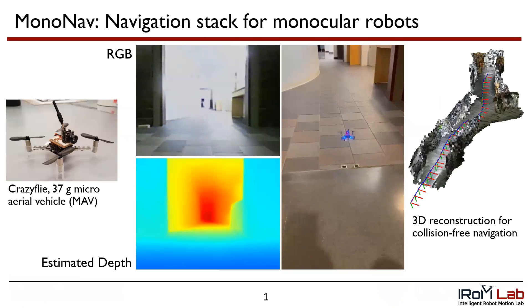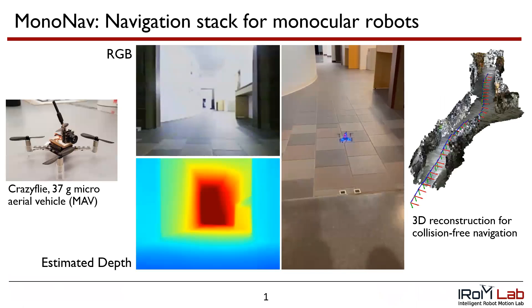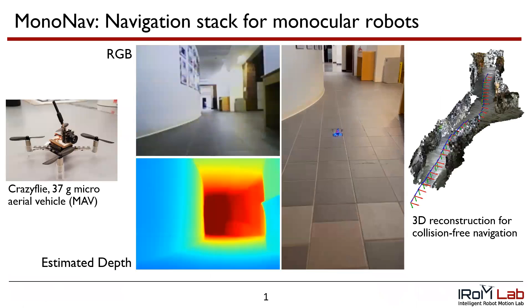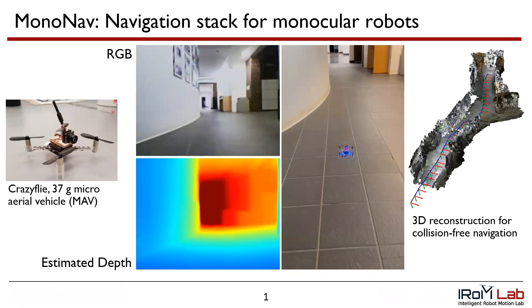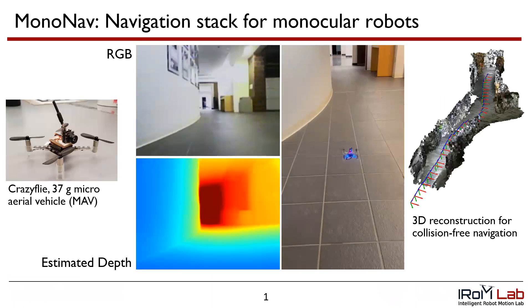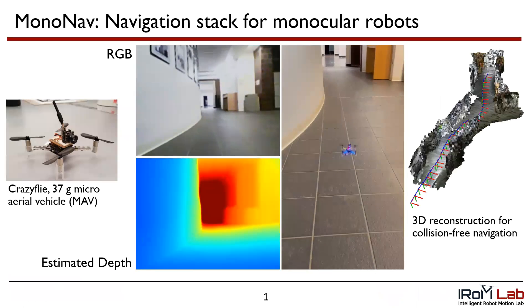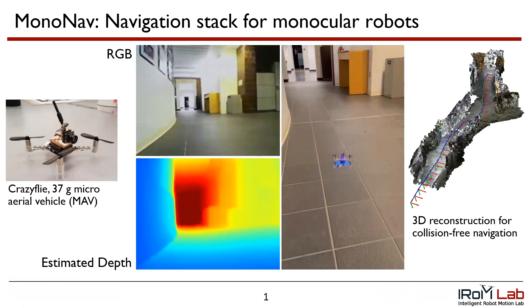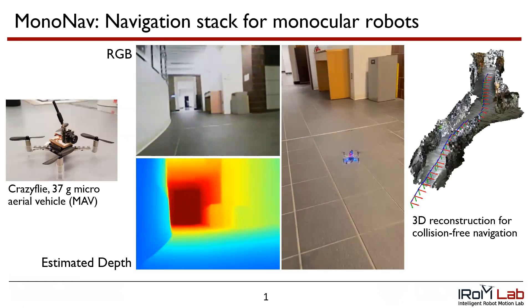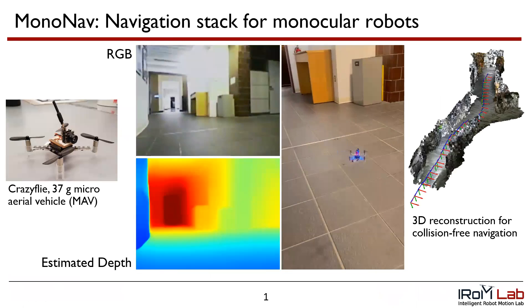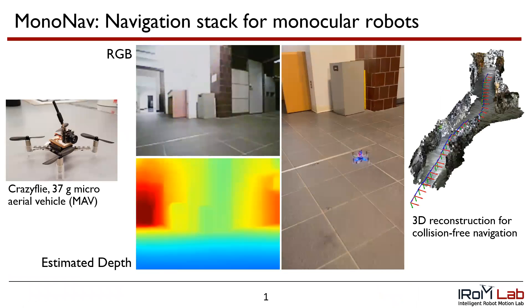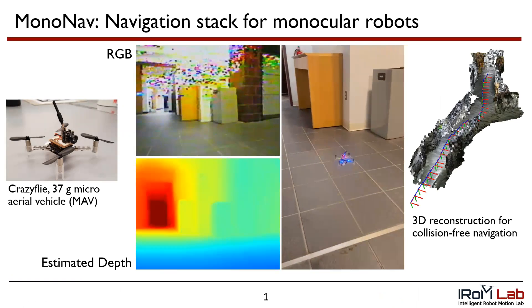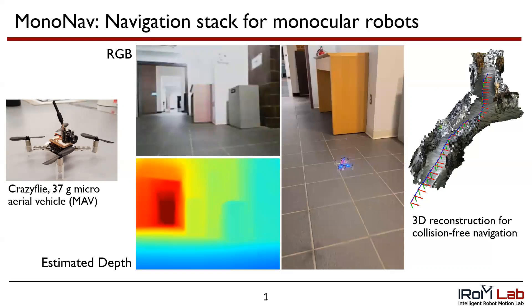We present MonoNav, a monocular navigation stack that leverages state-of-the-art metric depth estimation networks, off-the-shelf fusion algorithms, and conventional planning techniques to enable tiny monocular robots to navigate fast in constrained indoor environments. Here we see a 37-gram micro-aerial vehicle, or MAV, using MonoNav to navigate collision-free at 0.5 meters per second in a hallway environment.